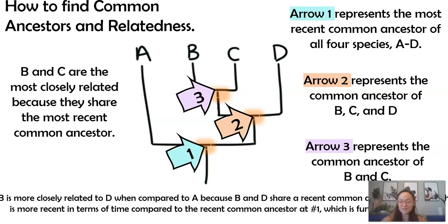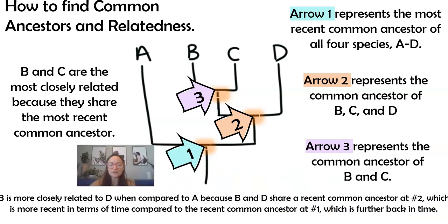When we look at other ways you can think about this tree, B is more closely related to species D. Because if we follow it back in time, that recent common ancestor at arrow number two is closer to today than arrow number one. So, B has a more recent common ancestor shared with species D than it does with species A. Evolutionarily, species A broke off or diverged longer back in time. So, A is more distantly related to the other three species. You'll get to practice this, I'm sure, in your classes.